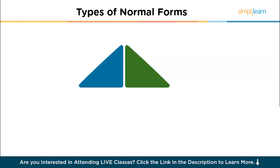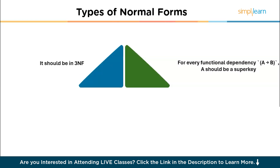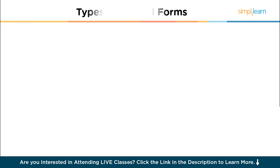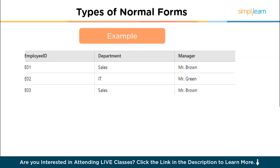Let's now talk about the Boyce-Codd Normal Form (BCNF). BCNF is an extension of 3NF. A table is in BCNF if it is in 3NF and for every functional dependency A implies B, A should be a super key. Consider a table consisting of employee ID, department and manager. The problem is a BCNF violation: department determines manager, but department is not a super key since employee ID is the primary key. This violates BCNF.